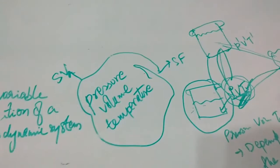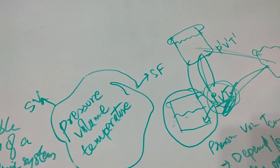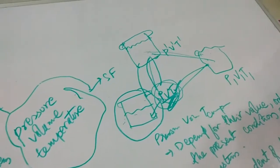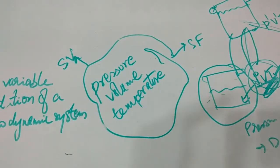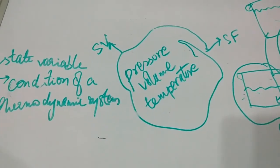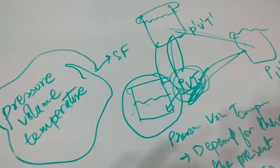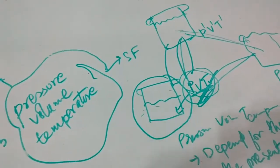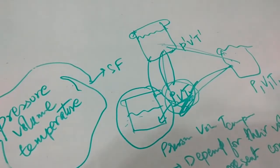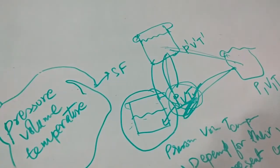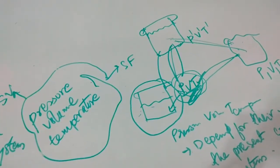I have made this video to make clear the difference between a state function and a state variable, and how these three are state functions and state variables at the same time. They are state variables because we use these to define the condition of the system, and they are state functions because these three do not depend on the path for their value. Their path can be anything but their value is independent of their path. That's all. Thank you.